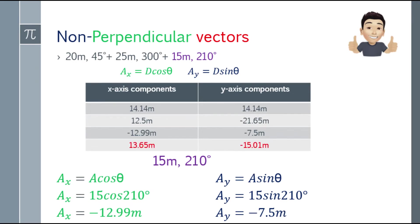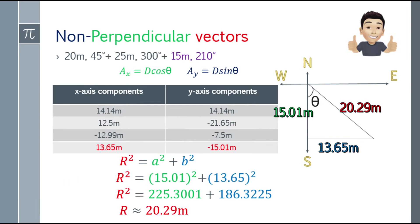We need to find the sum of the x-axis components and y-axis components. The answer will be 13.65 meters on the x-axis, and on the y-axis that will be negative 15.01 meters. Since 13.65 on the x-axis is positive, we're going east. On the y-axis, negative 15.01 means we're going south.